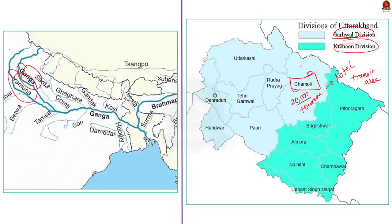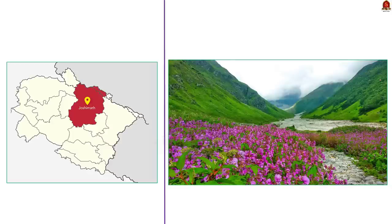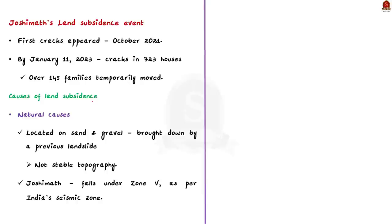Joshimath also acts as a transit area for a number of tourist places located deeper in the state. For example, to go to the famous Valley of Flowers, we need to first cross the Joshimath town. This shows the importance of Joshimath as a transit town. Note also that even if the Indo-Tibetan Border Police has to access the border areas of the Indo-China border, they have to use the roads of Joshimath, showing its strategic importance.